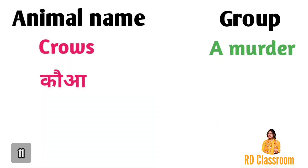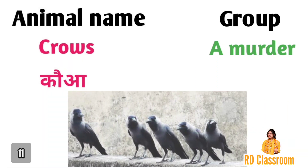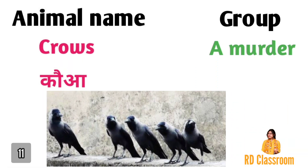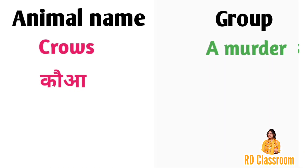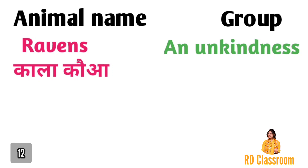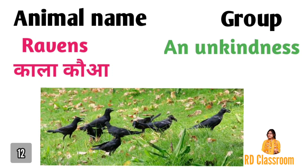Number eleven is crows, ya fir kawwa, jiske group ko kaha jata hai a murder. Number twelve is ravens, ya fir kawwa, jiske group ko kaha jata hai an unkindness.